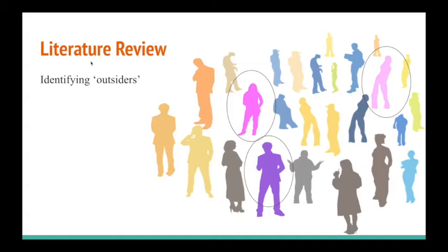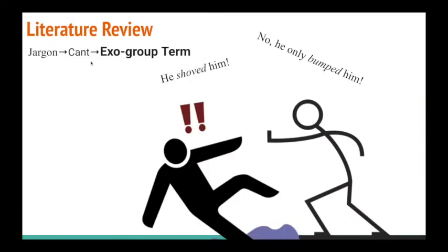But even though discrimination decreases, according to Mass, you can still face it based on the speech the two groups use when referring to each other. For example, there's a model called the Linguistic Intergroup Bias paradigm, which says people tend to express desirable in-group and undesirable out-group behaviors in abstract terms, while unfavorable in-group and favorable out-group behaviors tend to be expressed in concrete terms. For instance, if someone in your in-group pushed someone, you'd say 'he bumped him,' but if someone in your out-group did it, you'd say 'he shoved him.'